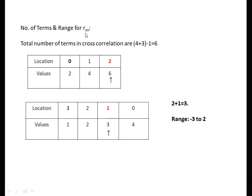For R_yx, the number of terms are the same as R_xy, but the range is different. The first signal y is taken in the forward direction: 2, 4, 6, with counter 0, 1, 2, arrow at index 2. The second signal x is taken in reverse: 1, 2, 3, 4, with counter 0, 1, 2, 3, arrow at index 1. Adding: 2 plus 1 equals 3, so the signal starts from minus 3 to next 6 locations, giving 2. Therefore R_xy is not equal to R_yx.